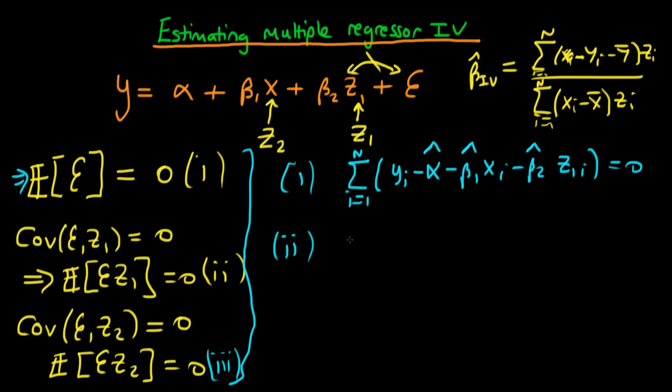Expression two is just that we have that the sum from i equals 1 to n of z1i times the error yi minus alpha hat minus beta1 hat xi minus beta2 hat z1i has to be equal to zero. And note again that this is just the sample analog of condition two because this term in the parenthesis here is just our estimated error ei hat.